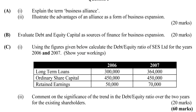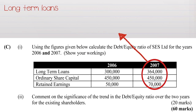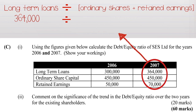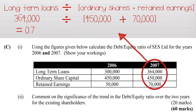For 2007, the exact same procedure. The long-term loans are €364,000, the shares are €450,000, and the retained earnings are €70,000. That works out to be €364,000 divided by €520,000, which gives 0.7, expressed as a ratio of 0.7:1.